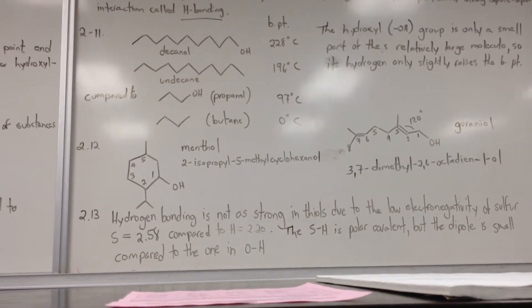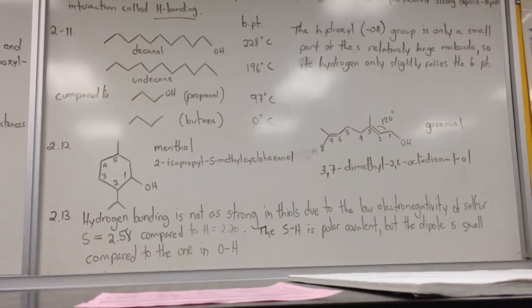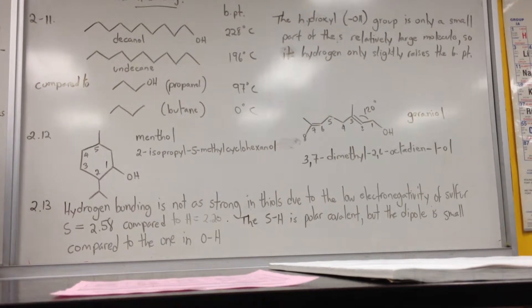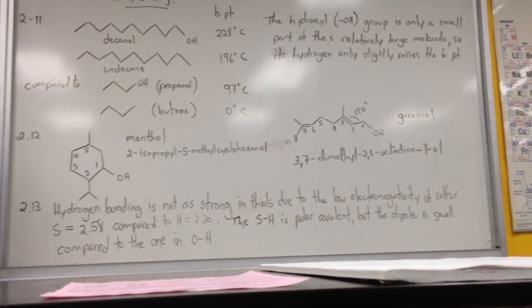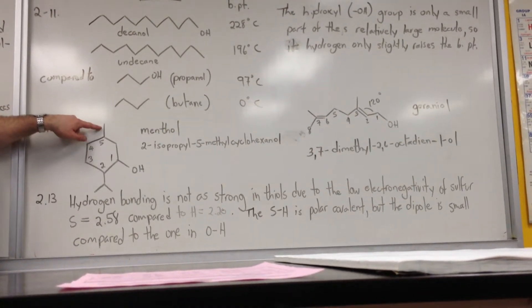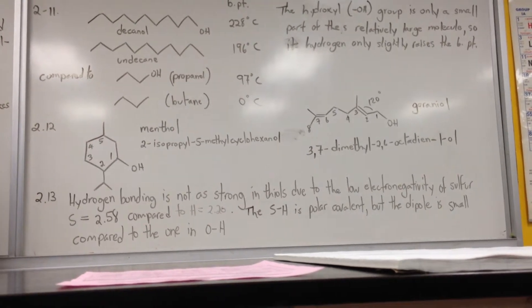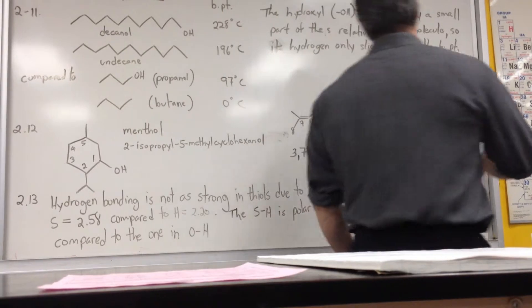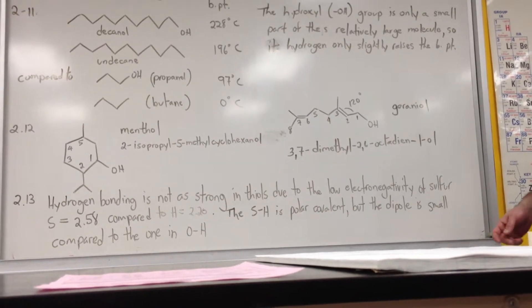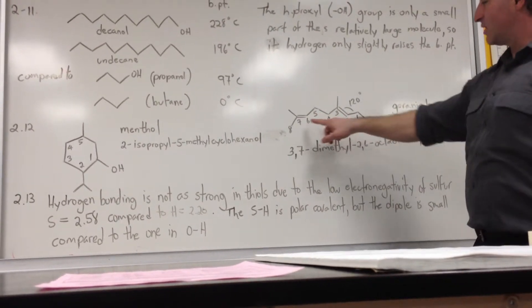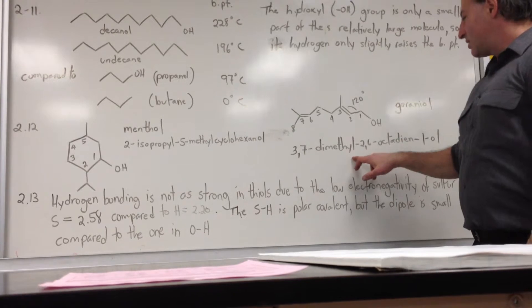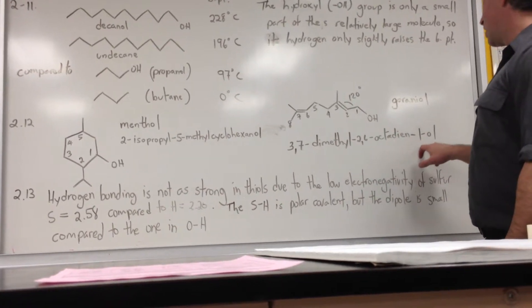Moving on to question 2-12, we have two alcohols to name. You'll notice that hydroxyl group takes priority over alkyl groups, so we start the numbering at the alcohol group, the hydroxyl group, and we continue clockwise. This would be called 2-isopropyl-5-methyl-cyclohexanol. This molecule, which has a trivial name of geraniol, it's the essence of rose oil, is 8 carbons long with a double bond at the 2nd and 6th position, and the methyl group at the 3rd and 7th position. So we would call that 3,7-dimethyl-2,6-octadiene-1-ol.